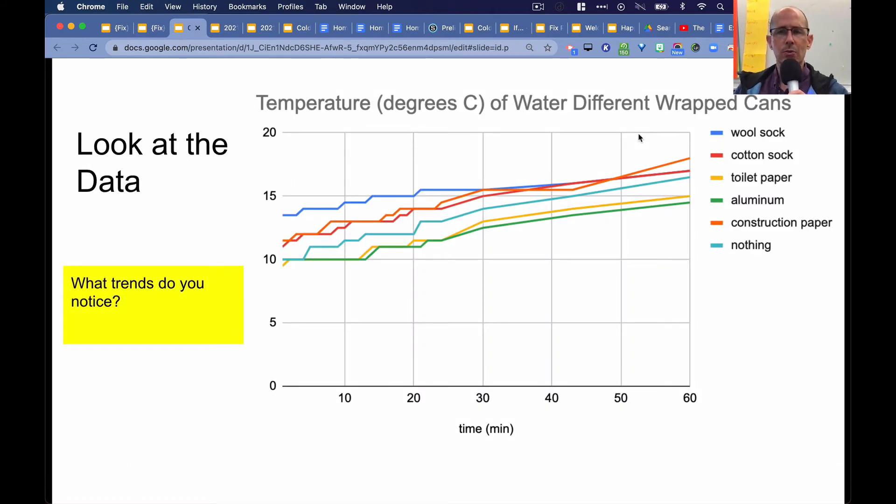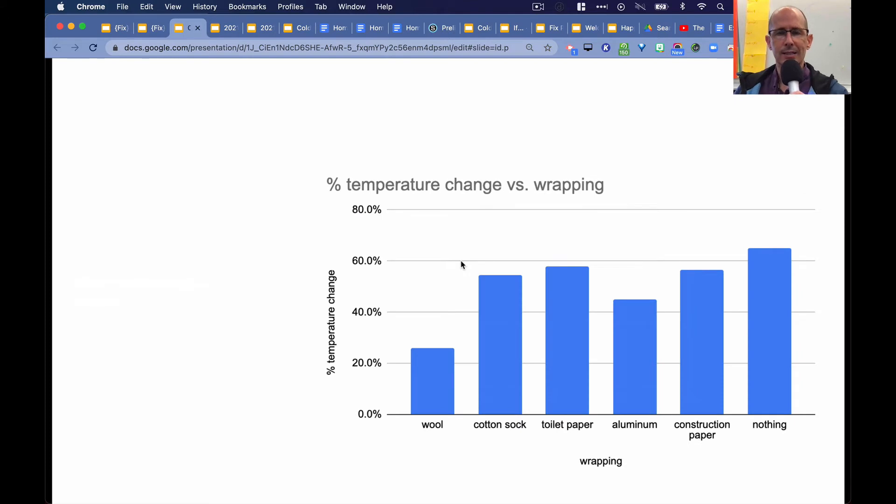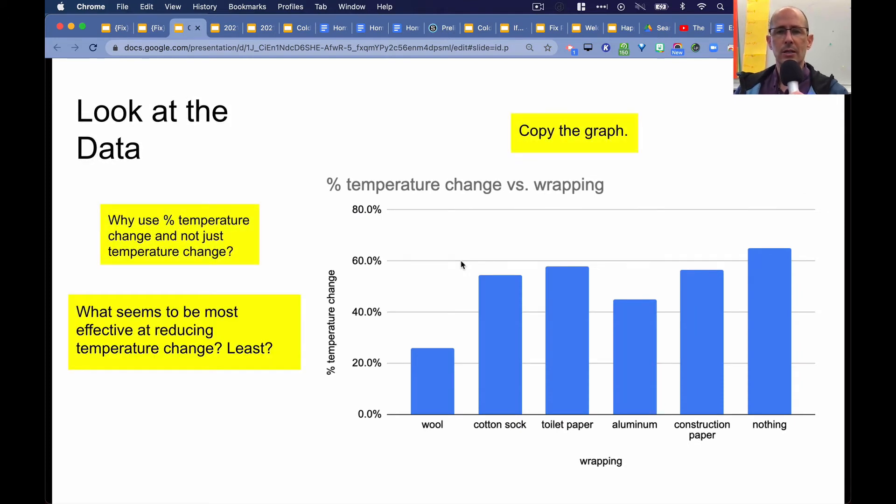And so the trends we saw in the data was that all wrappings, including no wrapping, had an increase in temperature over time. Now, we can't tell from this data the temperature versus time graph of which one was the best, so we have to take that data and then we calculate the percent temperature change for each one. So based on that, we recognized that the wool sock had the least amount of percent temperature change over time, then aluminum and then the rest.